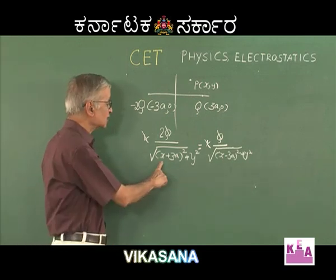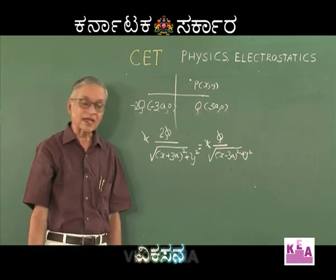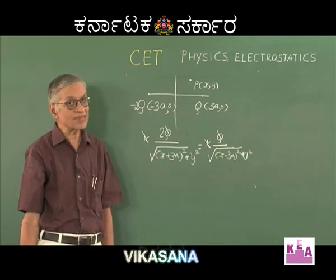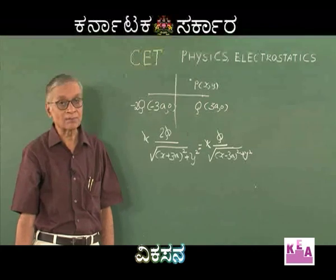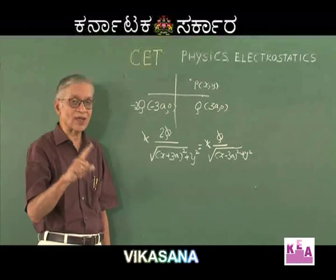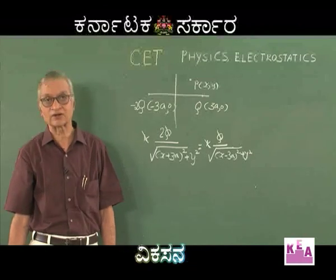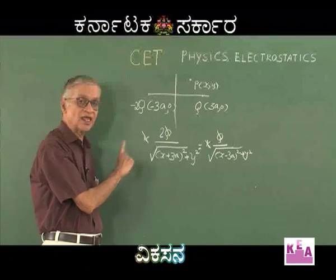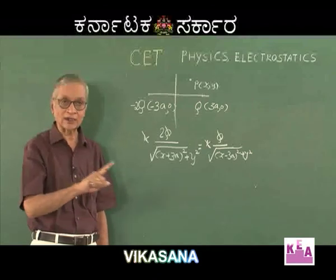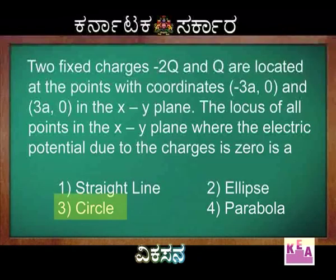Please note that the xy term is absent in both cases. You all know that a second-degree equation of the type Ax² + Ay² + 2gx + 2fy + C = 0 — that is, if the coefficients of x² and y² are equal and the xy term is absent — represents a circle. Therefore, since we have 3x² + 3y², the coefficients of x² and y² are the same and the xy term is absent. Hence the locus is a circle, and the third alternative is the correct answer.